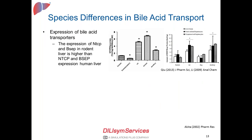What do we know about species differences in bile acid transport? Starting with expression data: literature shows that the protein expression of NTCP, the hepatic uptake transporter, and BSEP, the biliary excretion transporter, were measured in different animal species and human liver. The protein levels of both NTCP and BSEP were found to be higher in rodents like rats and mice compared to human liver, indicating that expression itself differs across species.